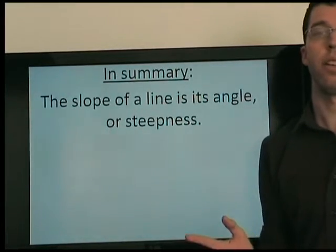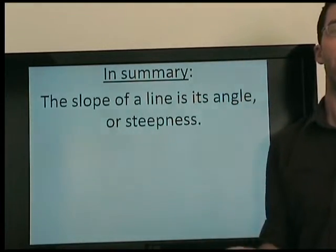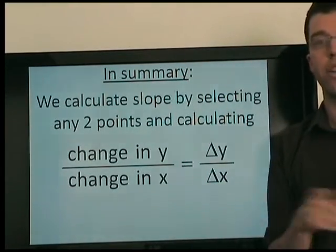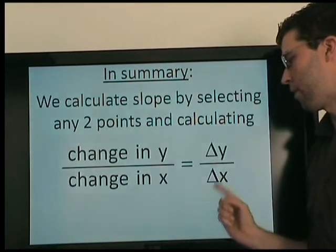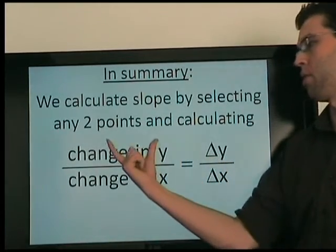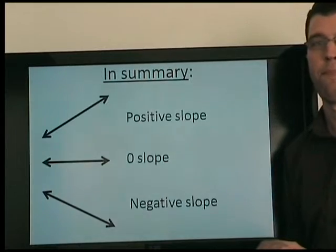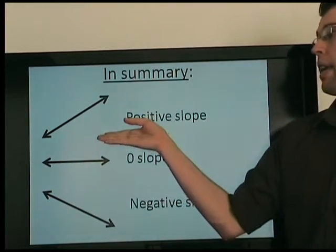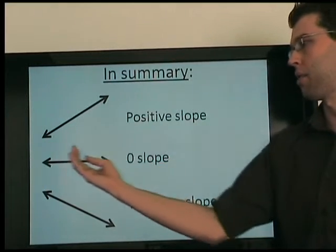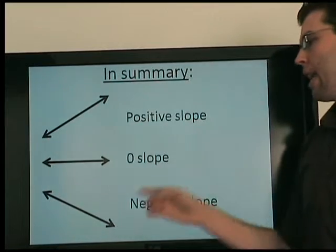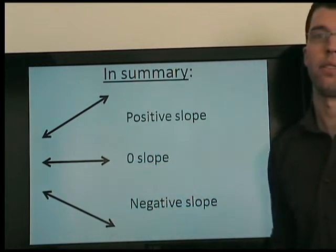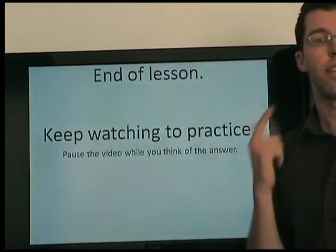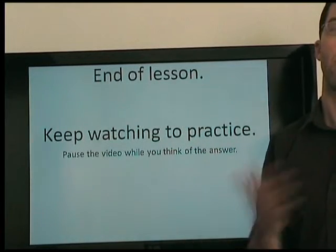So in summary, slope very simply is the angle or steepness of a line. How do we calculate slope? We pick 2 points — any 2 points — and we calculate the change in y and divide that by the change in x. A shorter way of writing this is delta y over delta x. This is the Greek letter delta; it stands for change in, so these mean the exact same thing. Slope can be positive, 0, or negative. Positive slope means as x increases, y increases also. Zero slope means as x increases, y neither increases nor decreases. And negative slope means as x increases, y decreases. That's the end of the lesson — please keep watching for the slideshow practice. It's really important that you test yourself, because it's more effective than just hearing someone else say the answer, and it tells you whether you understand or not. Thank you for watching.